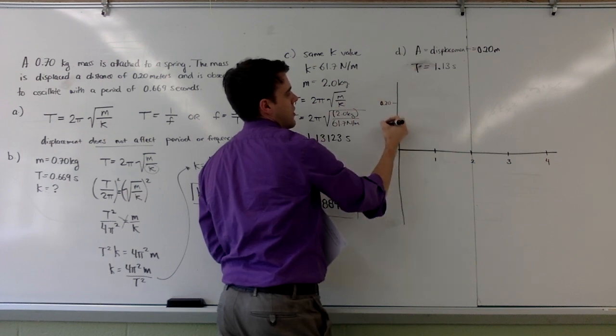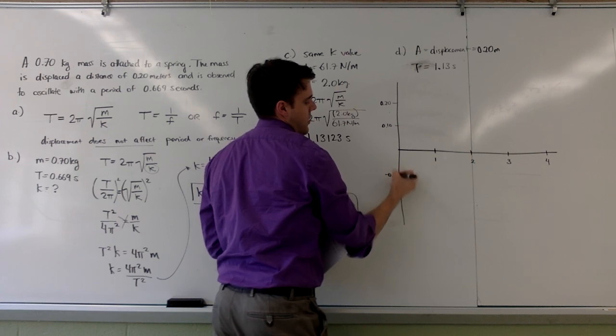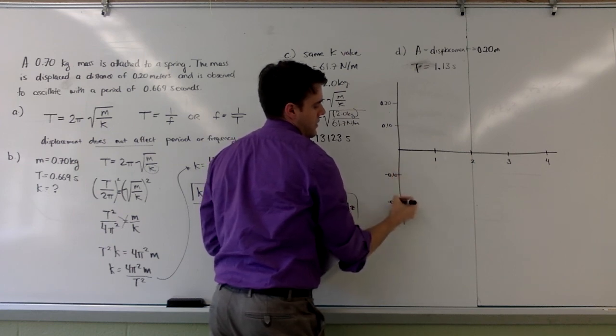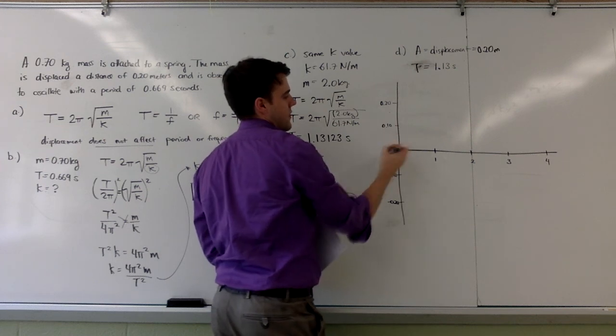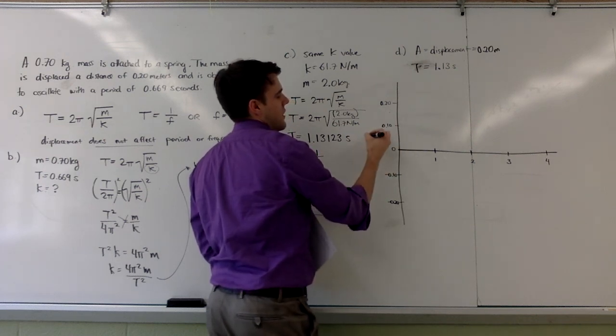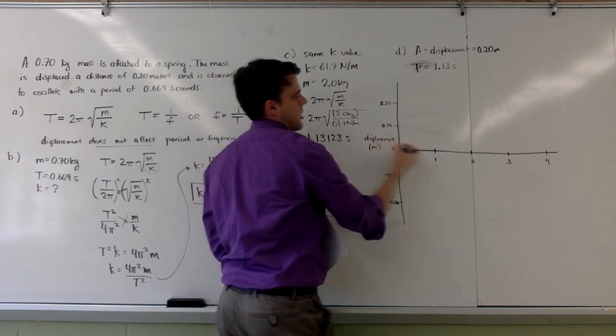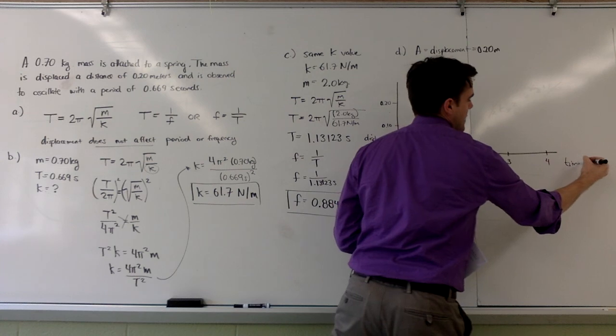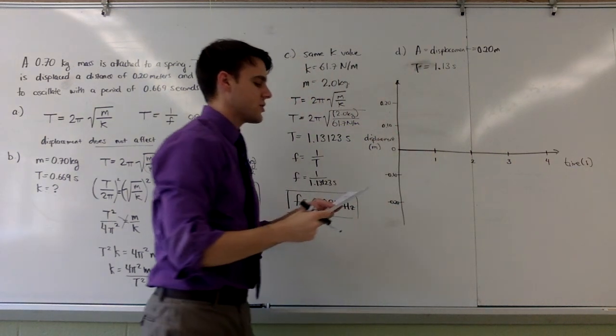And I'm going to need a displacement or an amplitude of 0.2 meters up and 0.2 meters down. We'll say 0.1 is a good step. So, this is 0.2, 0.1 going down, negative 0.1, negative 0.2. And just in case there's any confusion, there's my 0. This is my displacement in meters. This is my time axis in seconds.